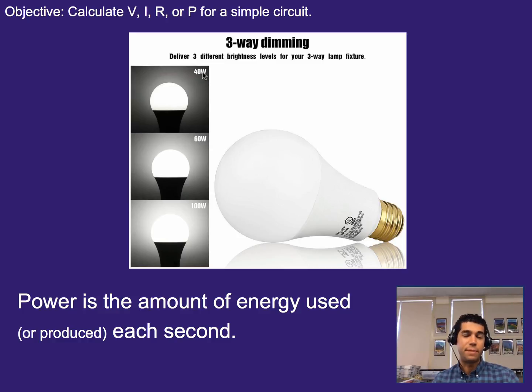And that energy or that power is measured in watts, which you've probably heard before, especially with light bulbs. So 40 watts is producing less light energy than 100 watts is, hence why it gets a little bit brighter each time.